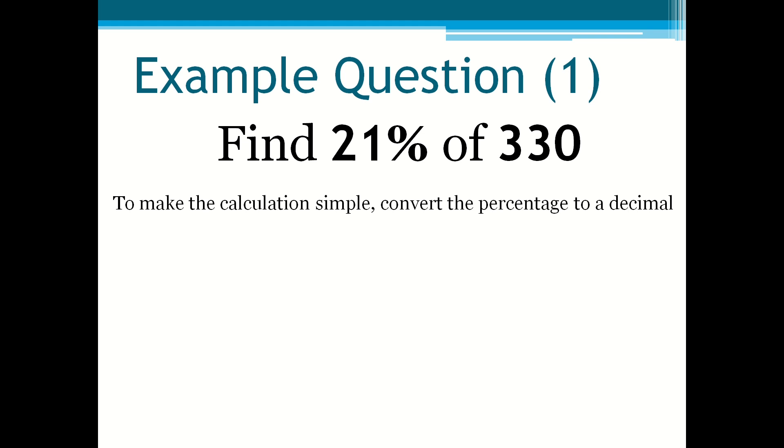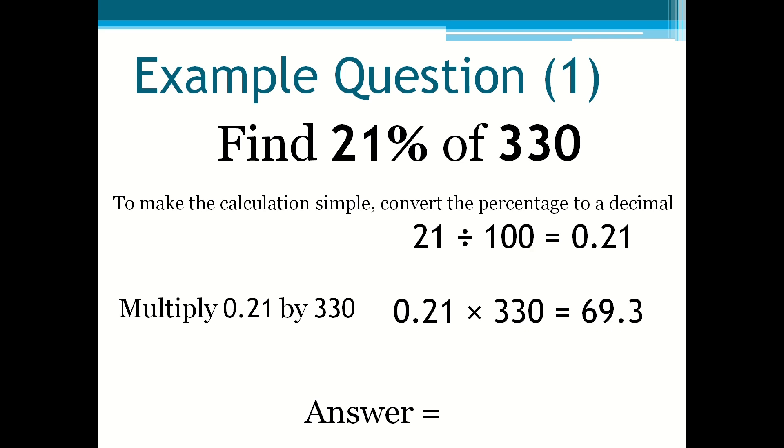21 divided by 100 is equal to 0.21. Next, you multiply the decimal by 330 and the answer is 69.3. So 21% of 330 is 69.3. Pretty simple.